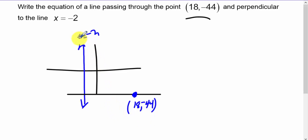Now I know if this is an x equals line, then the perpendicular has to be a y equals line. And y is always the same on this, so the y value has to be -44.